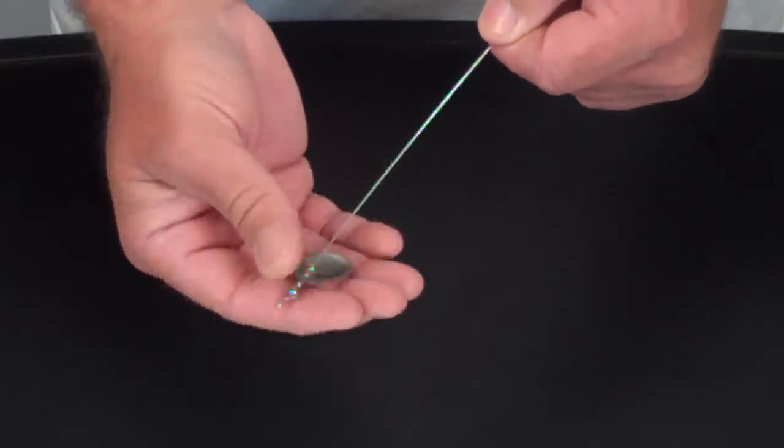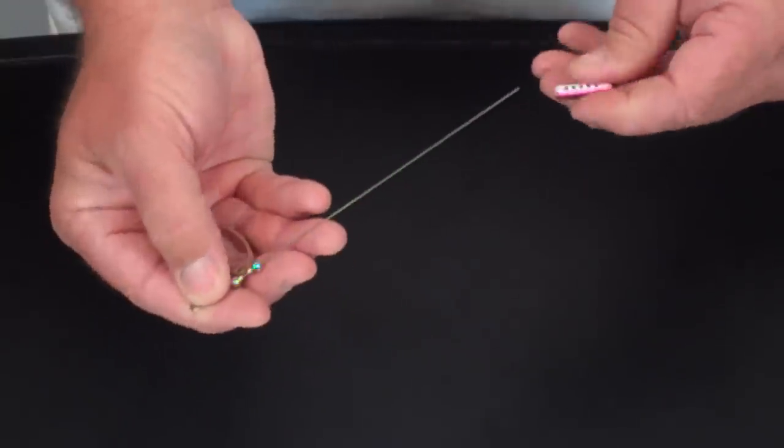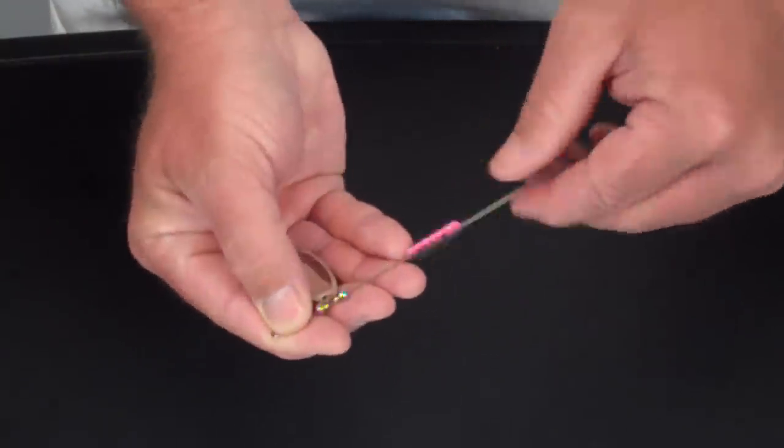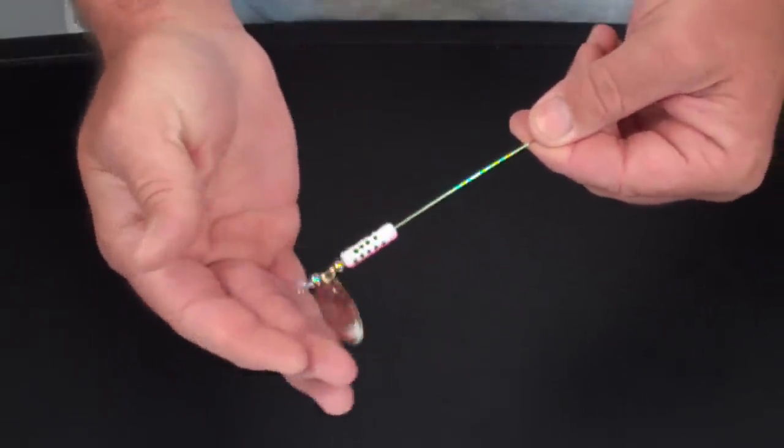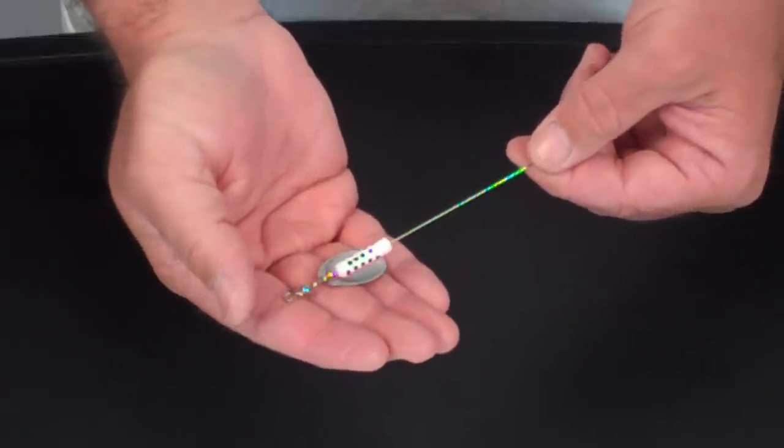At this point, we can now install our lure body. Our lure body adds weight to the spinner.